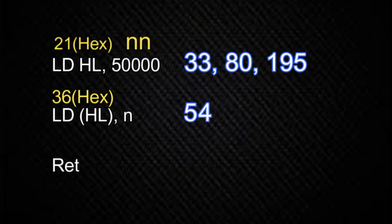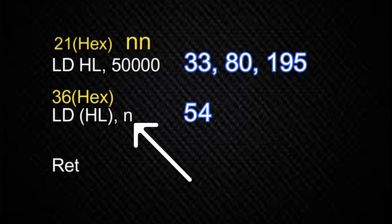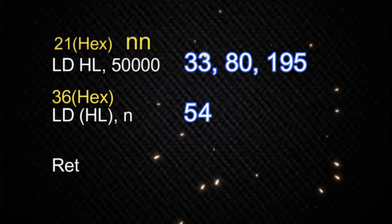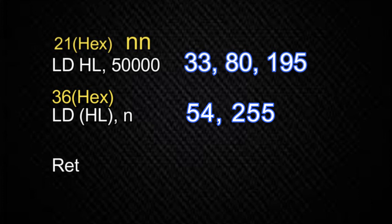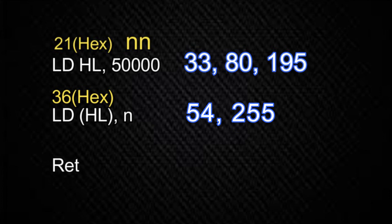The next byte represents the number being stored into that memory location — the N part of this command — and that's a one-byte value. We don't need to look this up because we can enter whatever value we want. Let's say we want to use a value of 255 decimal, which we used in our BASIC example a moment ago. In that case the next byte of our machine code program would also be 255 decimal. So this line loads a value of 255 decimal into memory location 50000, because 50000 is the value stored in the HL register pair.